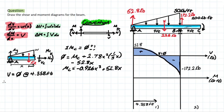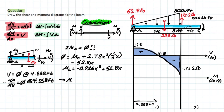Since we have a shear of zero at x = 4.358 feet, and we know from our rules that when shear equals zero the slope of the moment diagram is also zero, that point is an apex or critical point. So dM/dx = 0 at x = 4.358 feet. Let's plug that in: moment at x = 4.358 feet equals 153.46 pound-feet.